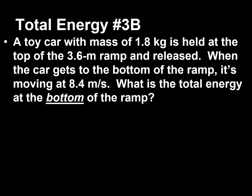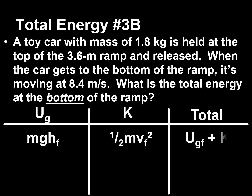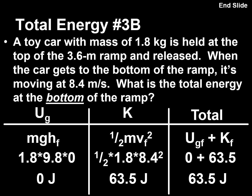Now looking at the same scenario at the bottom of the ramp: final gravitational potential energy = 1.8 × 9.8 × 0 = 0 joules (at the lowest point). Kinetic energy = ½ × 1.8 × 8.4² = 63.5 joules. Total energy at the bottom = 63.5 joules. The energy at the top was all gravitational potential; at the bottom it converted entirely to kinetic energy — same total, just a different form.